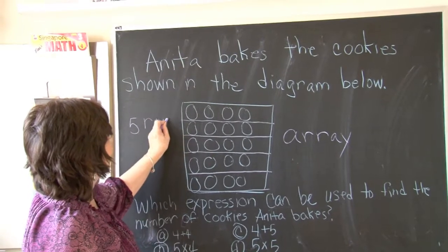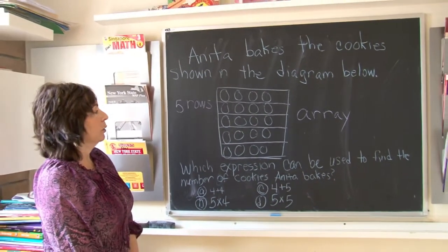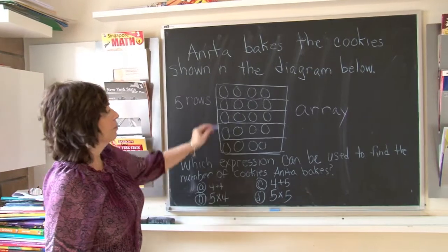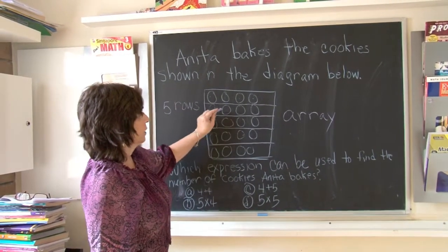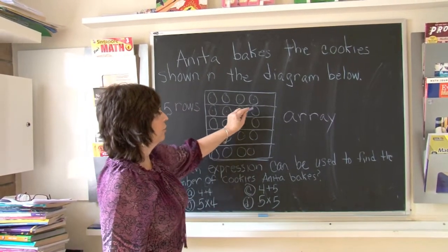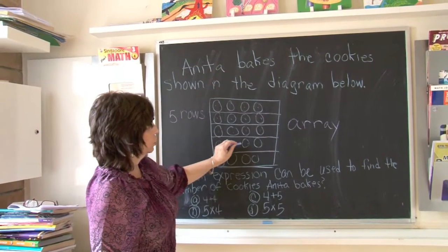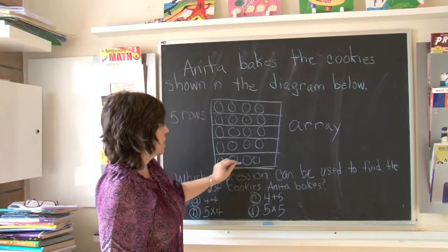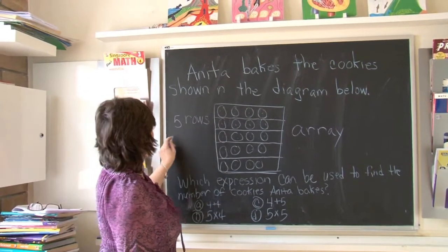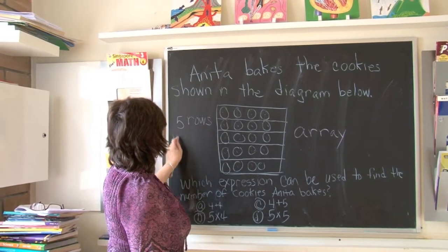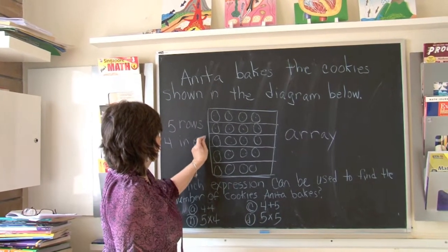The next thing we look at is how many are in each row. Let's count: one, two, three, four. We count each row the same way — one, two, three, four — for all five rows. So we have five rows with four in each row.